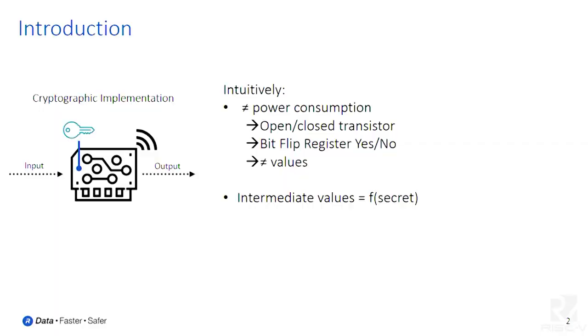Basically, a processor will consume different amounts of power when a transistor is open or closed, or when a register has to store a certain bit — it will consume a different amount of power when it stores a one versus a zero. And if we continue that reasoning, it means that if different values are being processed by a processor, it will consume a different amount of power.